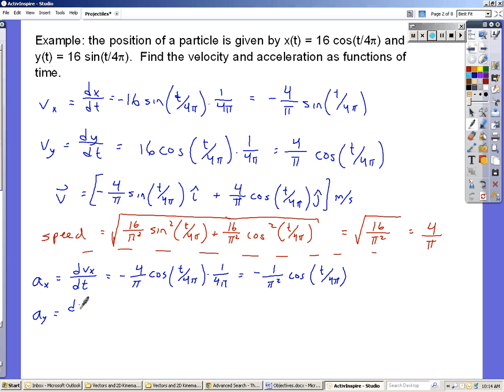Similarly, the y component of the acceleration is the derivative of the y component of velocity. We have that 4 over π, derivative of cosine is negative sine. And we have 1 over 4π again, because of the chain rule. And this comes out to be negative 1 over π squared times the sine of t over 4π.